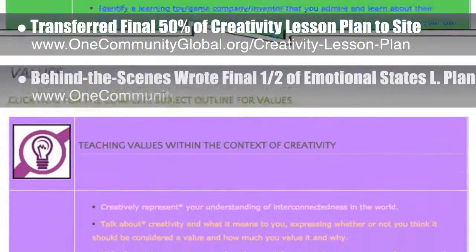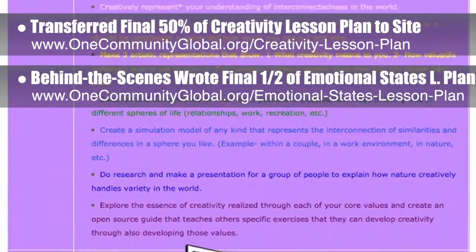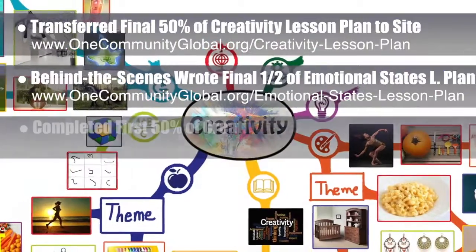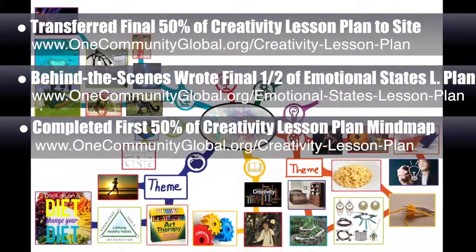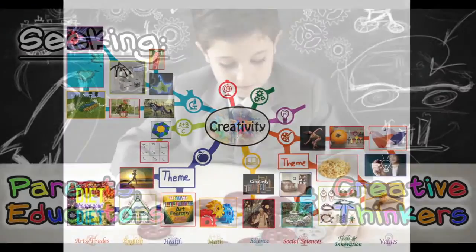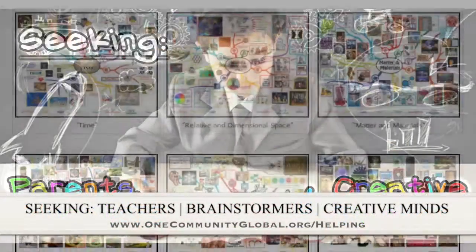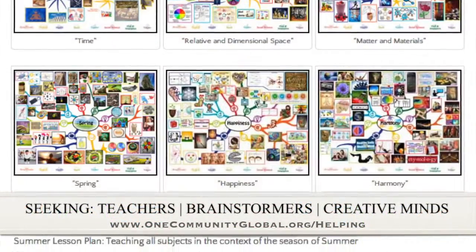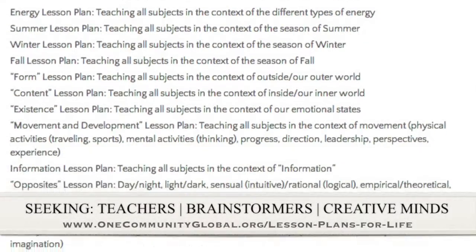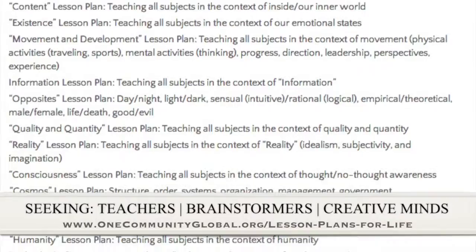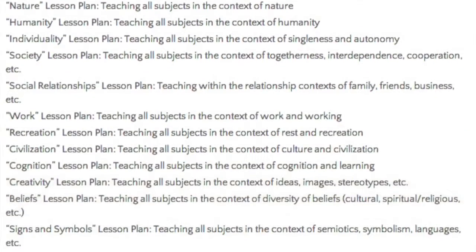Behind the scenes, we also wrote the final half of the Emotional States Lesson Plan, bringing the written part for that to 100% complete. And finally, we completed and added the first 50% of the mind map for the Creativity Lesson Plan to the webpage. If you'd like to help with this education program, we are seeking people to finish these lesson plans. We've got them all outlined and we're just looking for creative minds who would like to contribute to our open source and free shared education program for all ages and all educational levels.